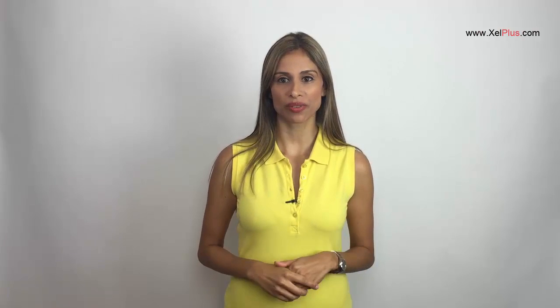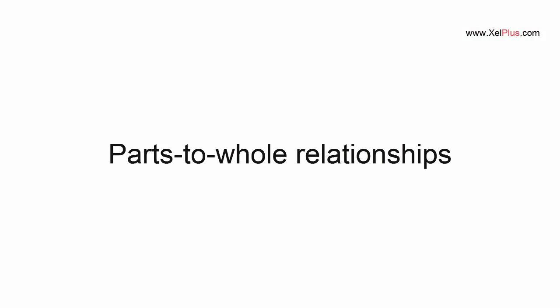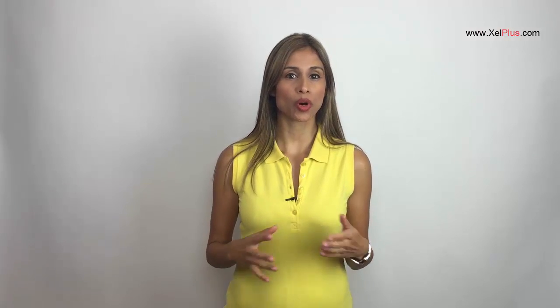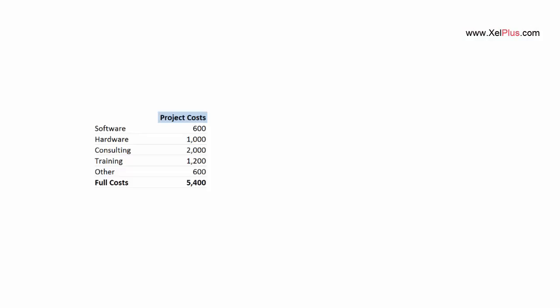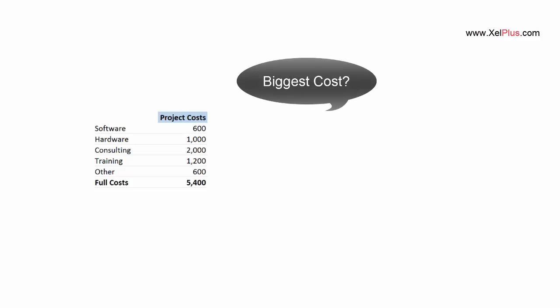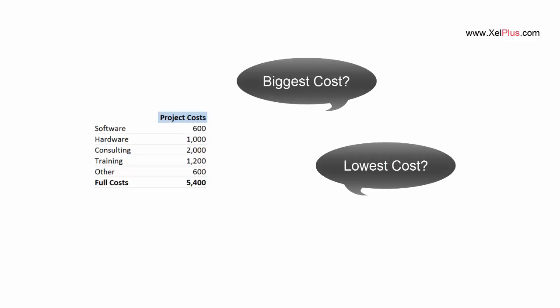Where the waterfall is not so effective is when you have parts-to-whole relationships. For example, let's say you want to show your project cost breakdown. This is how it looks like in a table. In a meeting there isn't that much time for people to go through the table and compare the numbers. You might want to visualize this for faster and easier understanding.